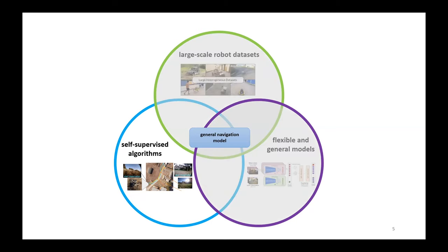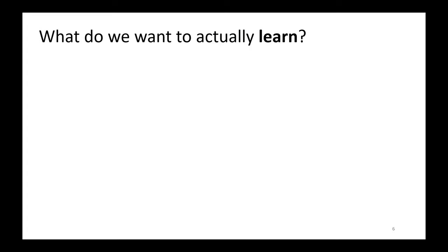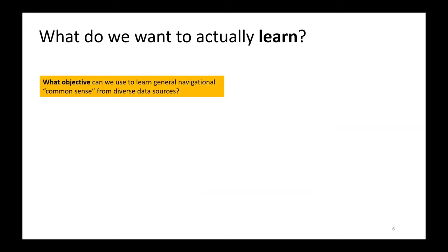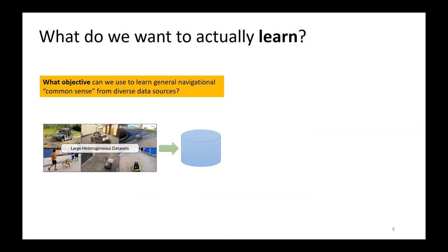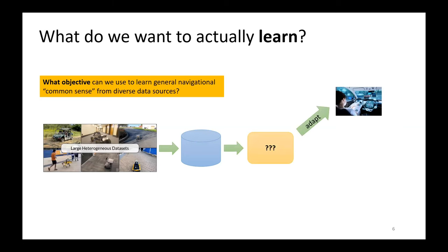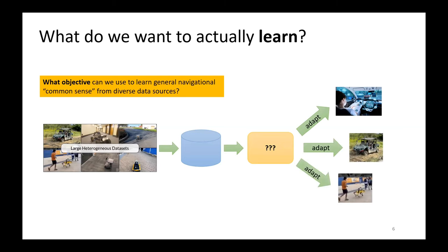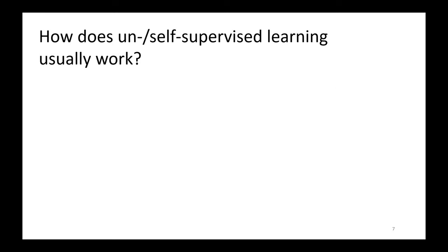So let me start with a brief discussion of algorithms. What do we want to actually learn from this navigational data? What objective can we use to learn general navigational common sense from diverse data sources? We're going to have all this heterogeneous data, pull it from all sorts of different robots doing all sorts of different things. Whatever comes out from running that algorithm needs to be suitable to be adapted to autonomous driving, off-road ATVs, sidewalk delivery, controlling Spot to run around and inspect buildings. We can take some inspiration from domains that have been successful at this. What do unsupervised or self-supervised learning methods in vision and NLP actually learn?